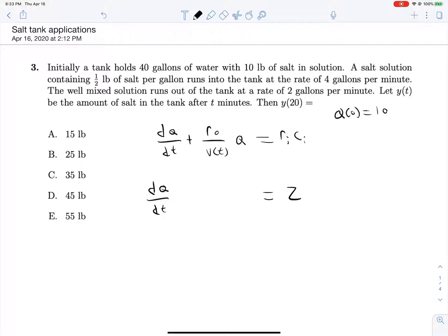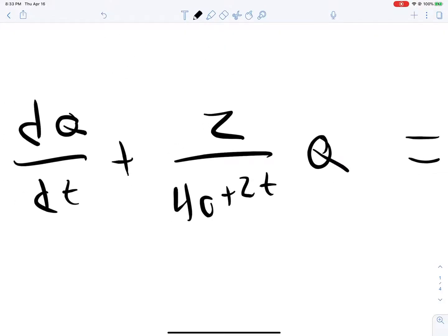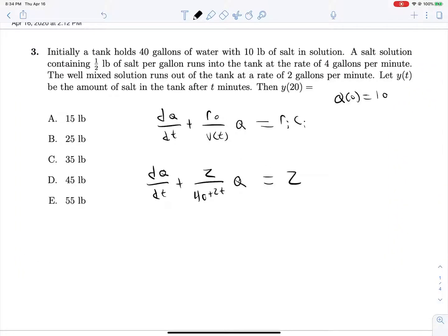We're running out of the tank at two gallons per minute, so plus 2 over v(t) times q. And v(t) in our case, since we initially have 40 gallons of water, it's flowing into the tank at four gallons per minute and flowing out at two gallons per minute. Each minute we are gaining two gallons of water in our tank, so hopefully that 40 plus 2t makes a little bit of sense - for every t minute we gain two gallons.